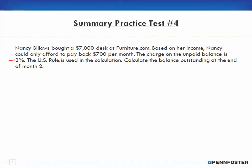The US rule comes from Chapter 10 and states that whenever we make a payment — in this case $700 a month — the first thing that gets paid off is the interest, and then the remaining portion of that payment goes against the principal. So calculate the balance outstanding at the end of month two.